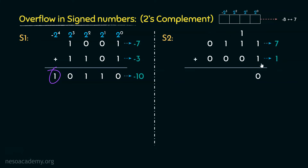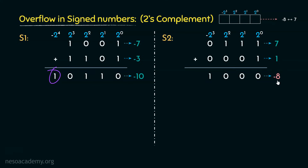Performing the addition: 1+1 gives 0 carry 1; 1+1+0 gives 0 carry 1; 1+1+0 gives 0 carry 1; 1+0+0 gives 1. In a 4-bit 2's complement number, a 1 in the most significant place gives minus 8. But 7 plus 1 should give positive 8, not negative 8. Although we encountered no carry, the result indicates overflow.